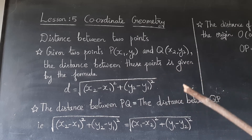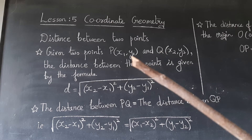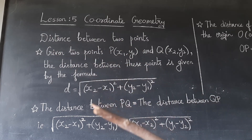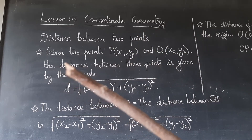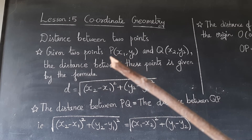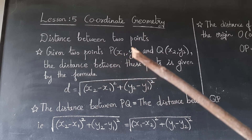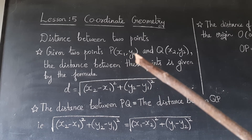For example, plotting the point (2, 3): x is 2 and y is 3. Given two points, consider the first point as P with coordinates (x1, y1), where x1 is on the x-axis and y1 is on the y-axis.